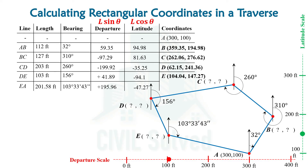On doing the calculation we will be having the departure and latitude of the EA line. Since the unknown coordinates are now being calculated, there is no direct need of calculating the departure and latitude, but there is still one use: if we add the latitude and departure of the EA line with the coordinates of point E, adding them together we will be having a value quite known to us — that is 300 and 100.